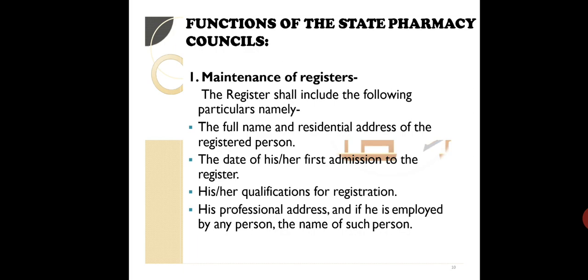Who are registered pharmacists? Those who have completed their degree or diploma in pharmacy and have applied to that particular state for registration. They receive a green booklet and a certificate as a registered pharmacist, stating that they are eligible to dispense drugs. The names of such persons written in that document constitute the register. Now it is clear what the register is and what maintenance of the register means.